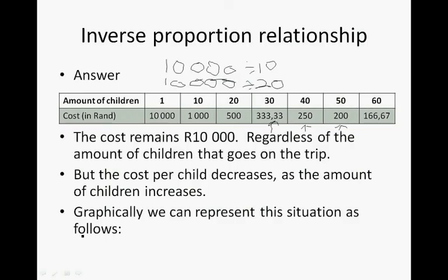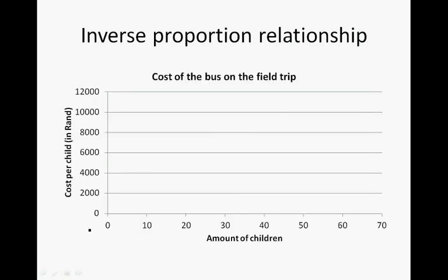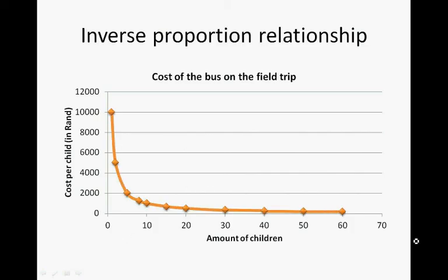Graphically, it can be represented as follows. The amount of children goes on the horizontal axis as the independent variable, and cost per child is the dependent variable on the vertical axis. As the amount of children increases, the cost per child decreases. This is what a curve looks like for an inverse proportion relationship. Thank you.